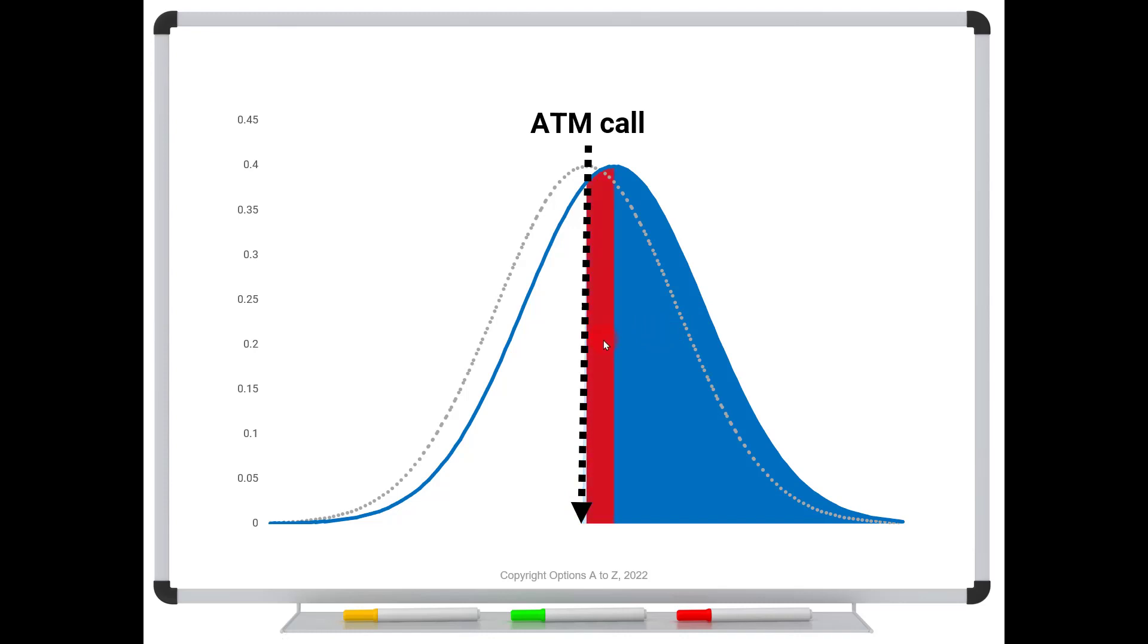Well, we've added this portion. And this red portion is the additional deltas that this option gained. And of course, that is gamma. Gamma simply shows by how much your deltas have changed.